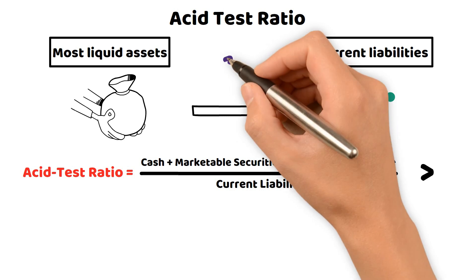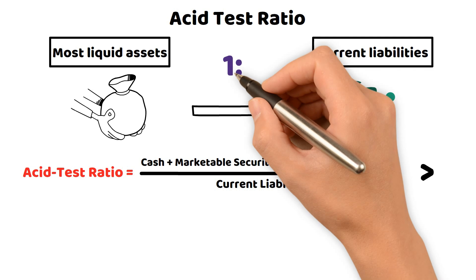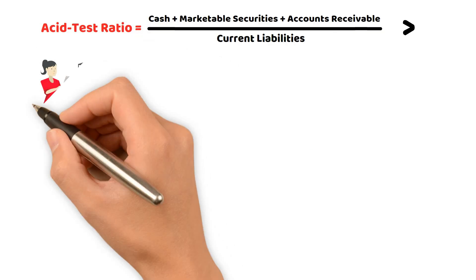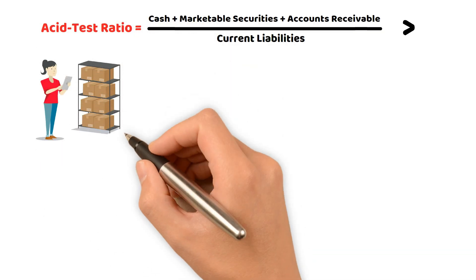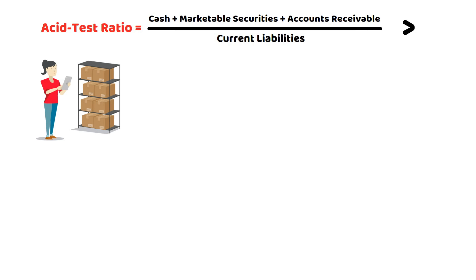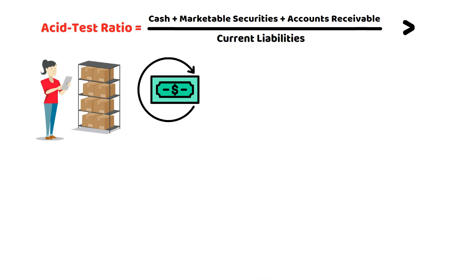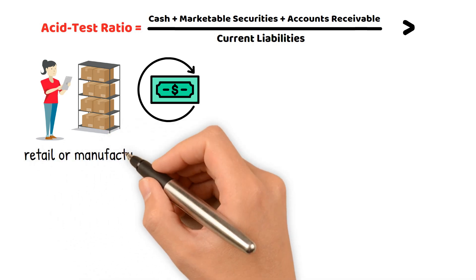Generally, a ratio of 1 to 1 is considered acceptable, meaning that the company has enough liquid assets to cover its current liabilities. The asset test ratio benefits companies with a high proportion of inventory or prepaid expenses, which may need to be converted to cash. It is also helpful for companies operating in industries with longer payment cycles or higher default risk, such as retail or manufacturing.